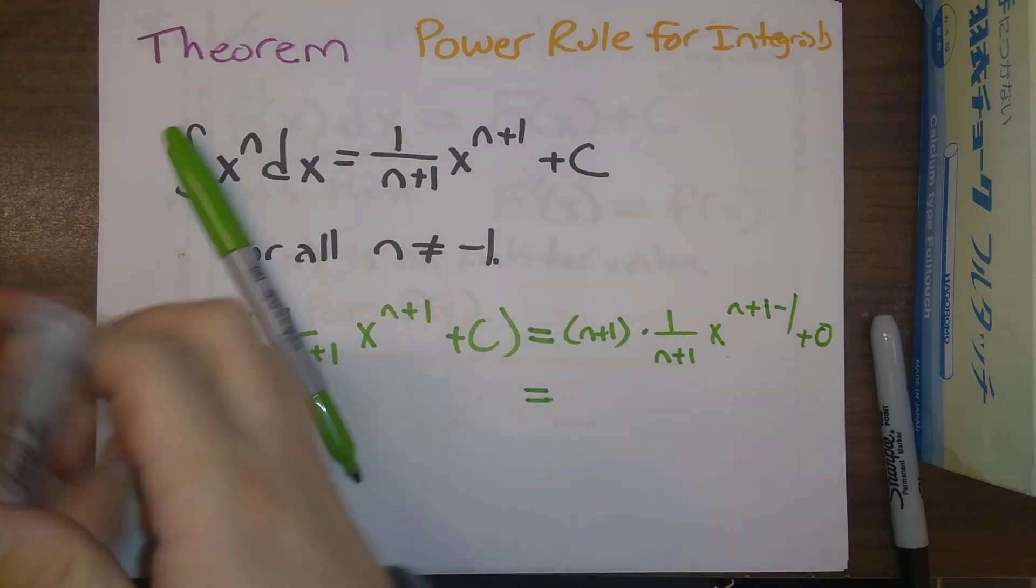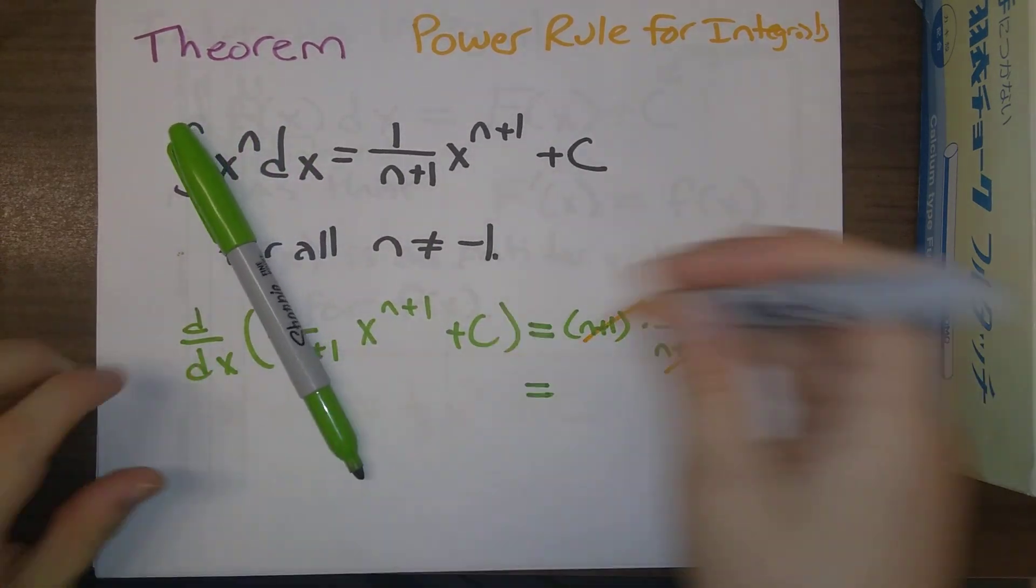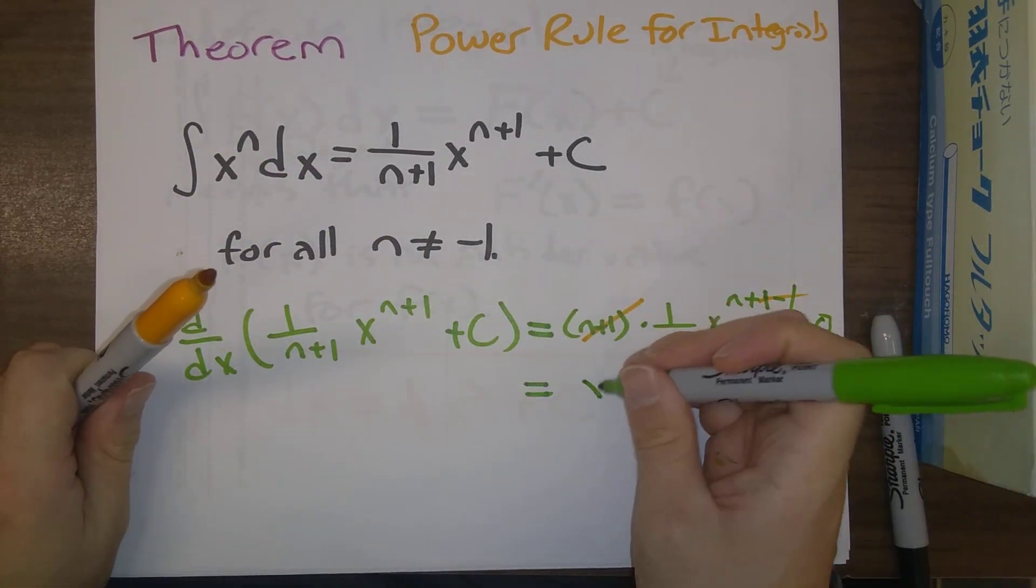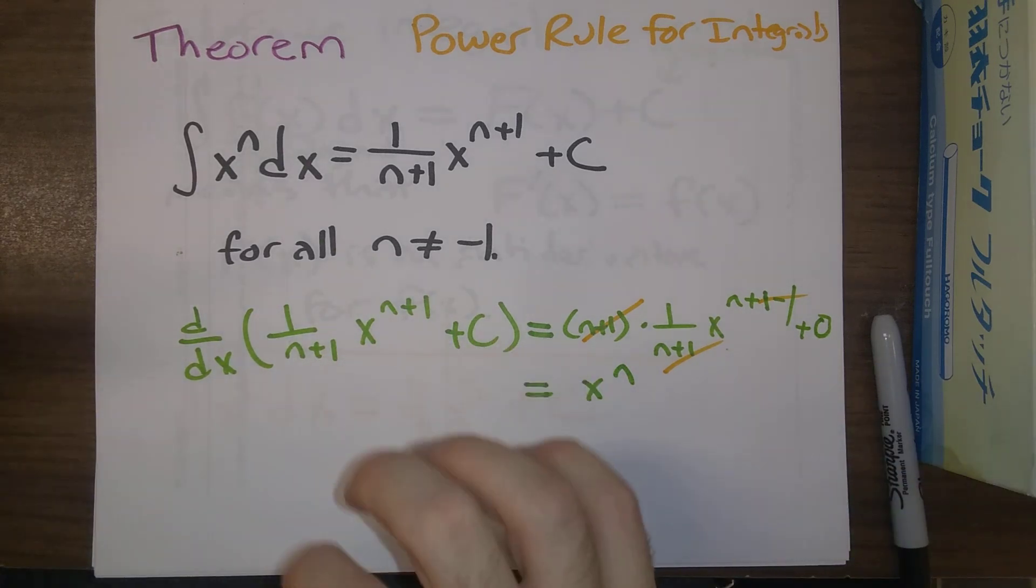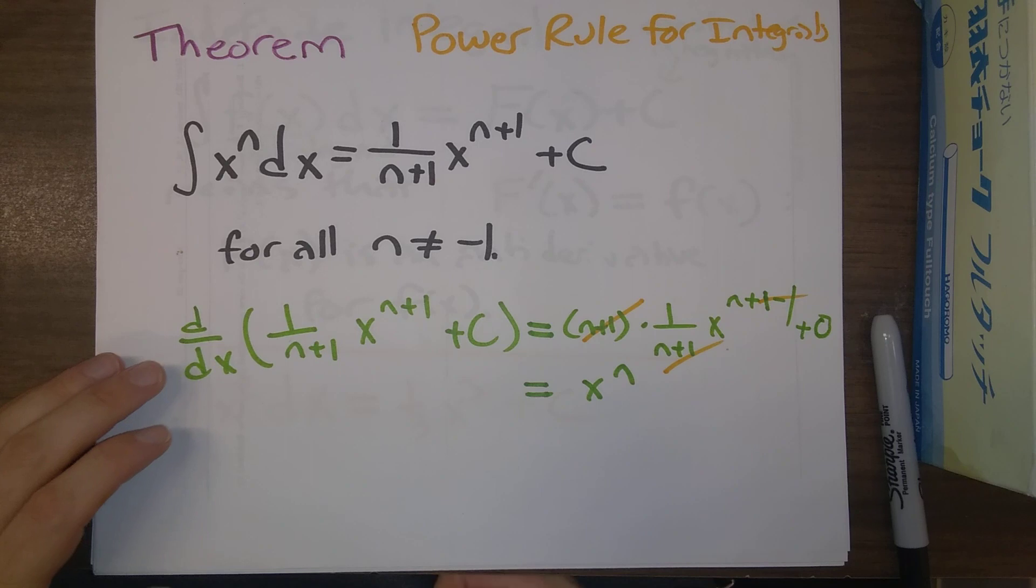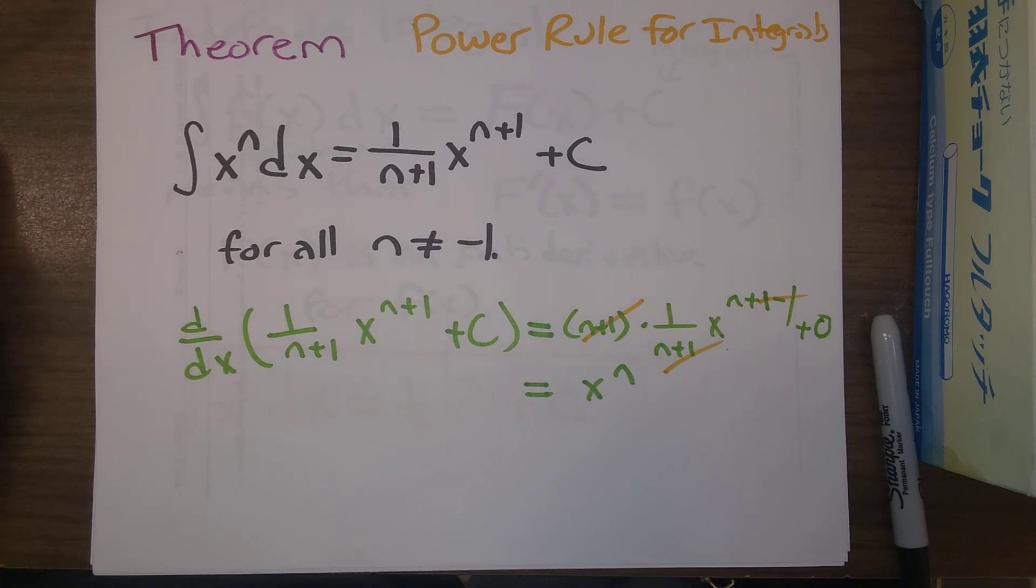So cancel, cancel, cancel there. Sure enough, we end up with x to the n. So the power rule for integrals, we basically just obtain this by reversing the power rule for derivatives.